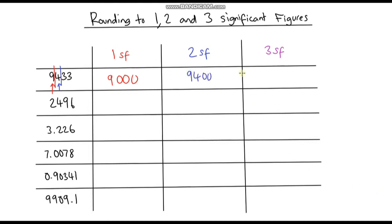And the last one — round to three significant figures. The 9 is our first, the 4 is our second, and the 3 is our third significant figure. We draw a line and look at the digit to the right of it. Just like before, this is less than 5, so the digits stay the same value: 9, 4, 3, and then we need to put a 0 on the end. So the answer is 9,430.